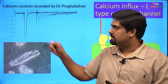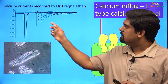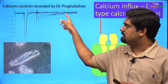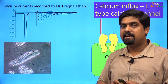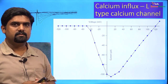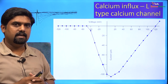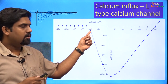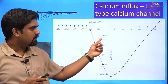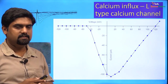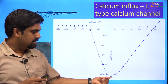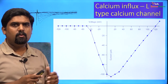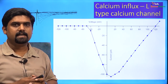A large inward current on the left is sodium current. If the cell is kept depolarized for a longer period, the magnitude of the calcium current decreases — this property is known as inactivation. The current-voltage or IV curve shows the channel opens at about minus 40 millivolts, with peak current at around 0 millivolt depolarization. Because these channels open at more positive potentials, they are also known as high voltage-activated calcium channels.